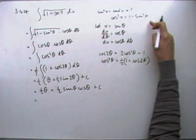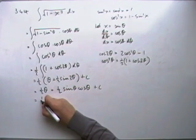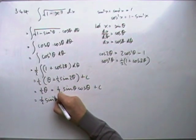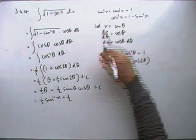Then put it all back. Theta. Well, x was sin θ, so the inverse, θ is inverse sine of x. Half of inverse sine of x, plus a half of. Now sin θ was just x.